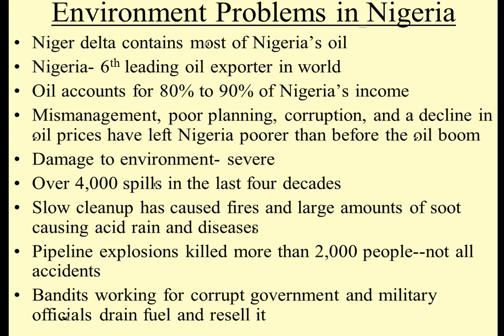Desertification is destroying parts of Africa. Environmental problems in Nigeria: the Niger Delta contains most of Nigeria's oil. It's the sixth leading oil producer in the world, and oil accounts for 80 to 90% of Nigeria's income. Mismanagement, poor planning, corruption, and a decline in prices have left Nigeria poorer than before the oil boom — the people were actually better off before oil was discovered than after.